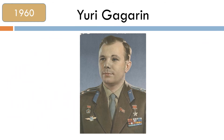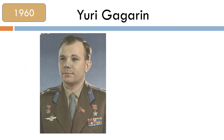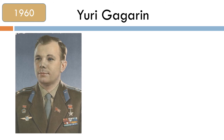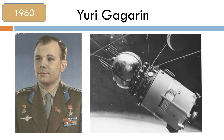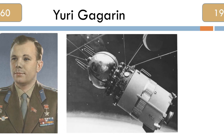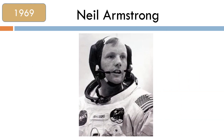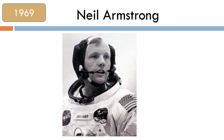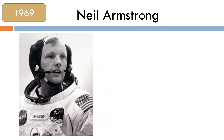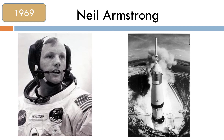In 1960 Yuri Gagarin became the first man to fly into space and orbit Earth. In 1969 Neil Armstrong and his crew flew in a rocket to explore the Moon.